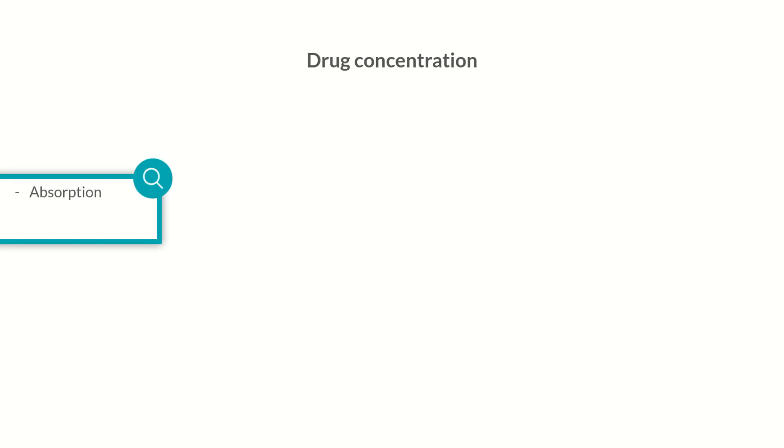In contrast, systemic drugs are distributed throughout the body to be transported to their site of action. Therefore, the drug's concentration at this site depends directly on its concentration in the circulation. To monitor this effect, the plasma level of systemic drugs is usually measured and presented in a diagram.